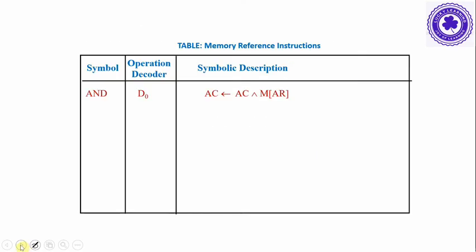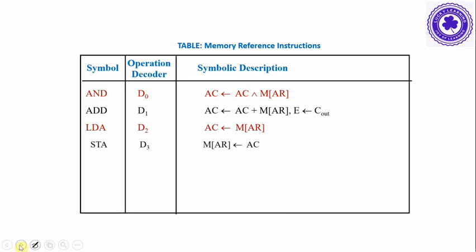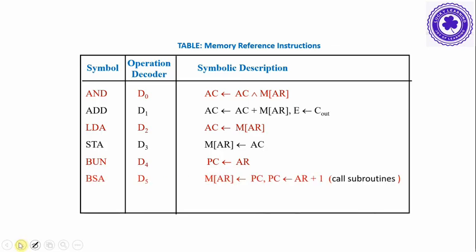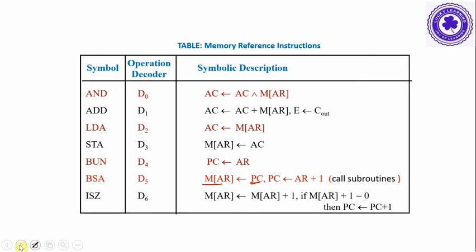The seven memory reference instructions are: AND to accumulator, ADD with accumulator, Load from memory into accumulator, Store accumulated data into memory, Branch Unconditionally (BUN) so that the address register value is stored into PC so the next instruction is the branch target, BSA (Branch and Save Return Address) which stores the return address into a memory location and branches to the service routine, and ISZ (Increment and Skip if Zero) which increments memory contents and if the incremented value becomes zero, skips the next instruction by incrementing the PC.